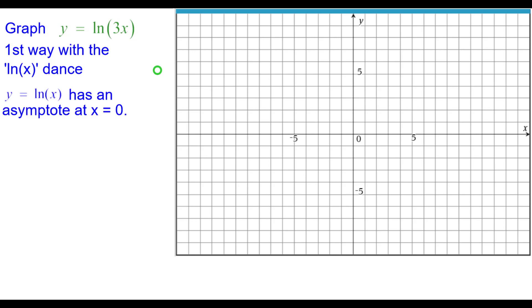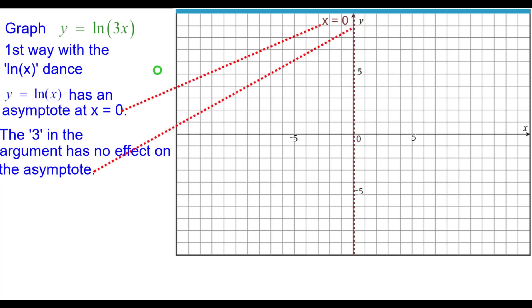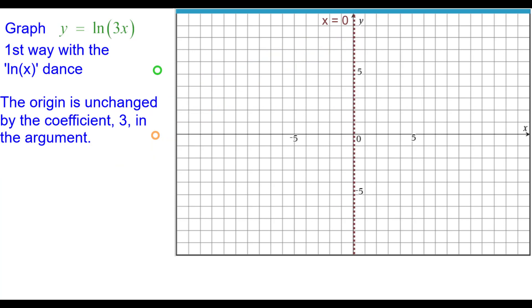Y equals the natural log of x has an asymptote at x equals 0 and the 3 in the argument has no effect on this asymptote. So let's go ahead and graph the y-axis or the line x equals 0. The origin is also unchanged by the coefficient 3 in the argument. So we'll plot that as our reference point.